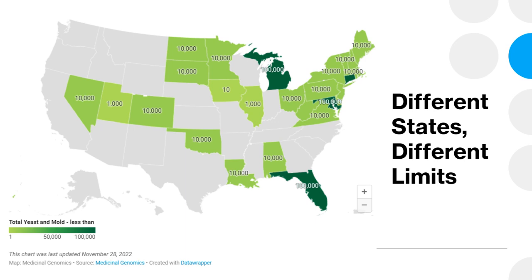The states have to make their own decisions, so they're going off of food or other regulatory bodies and taking suggestions to develop the limits in their state. You can also see that there are several states with marijuana programs — recreational or medicinal — that do not even require total yeast and mold testing. Some examples are California, Washington, Oregon, and Missouri, which all have cannabis programs but none of them require total yeast and mold testing.